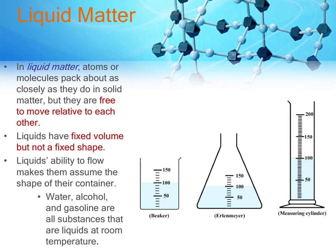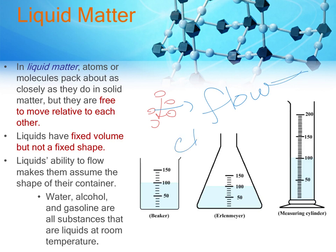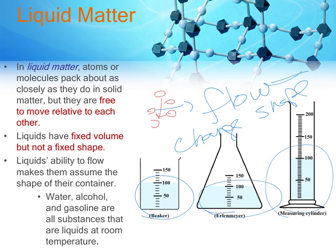Liquid molecules are still pretty close together, but there is room for them to slide, trade places, and slide past one another. Because of that, liquids are able to flow, and because they can flow, they can change shape. You can see that we have 100 milliliters of water — if we start with 100 milliliters, regardless of the container we put it in, we are going to keep 100 milliliters.